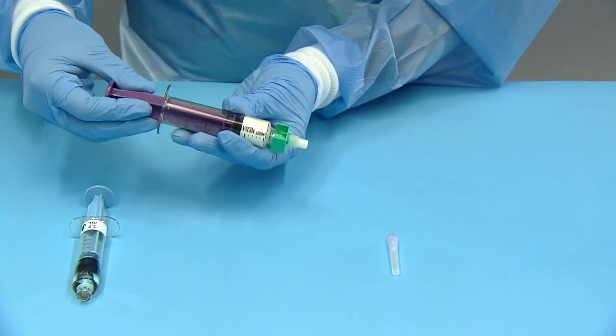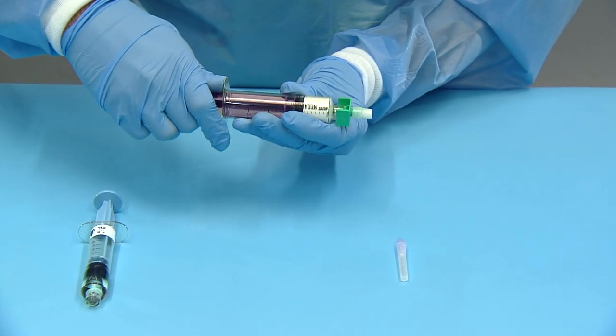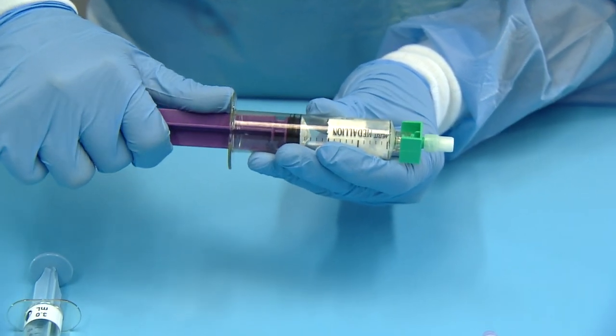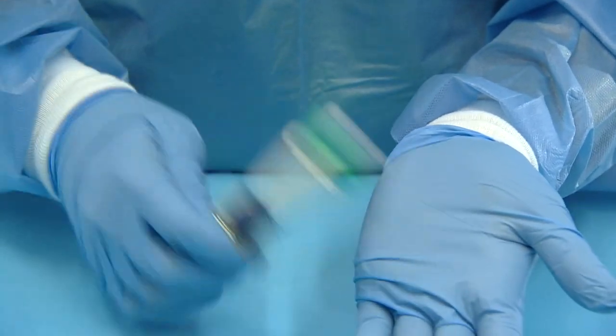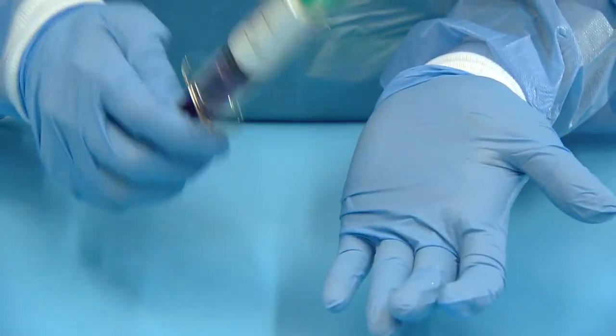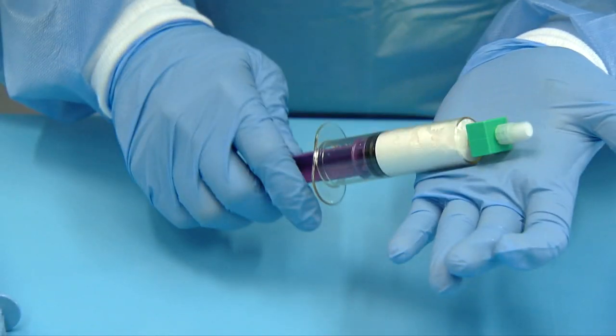Pull back the plunger of the powder syringe to aspirate approximately one cc of air. Hold the powder syringe vertically with green connector on top and tap the side of the powder syringe near its tip sharply four to five times with a hard tool or against a hard surface to loosen the powder.